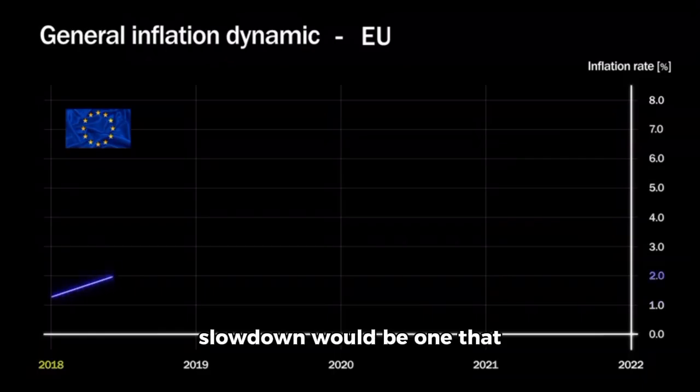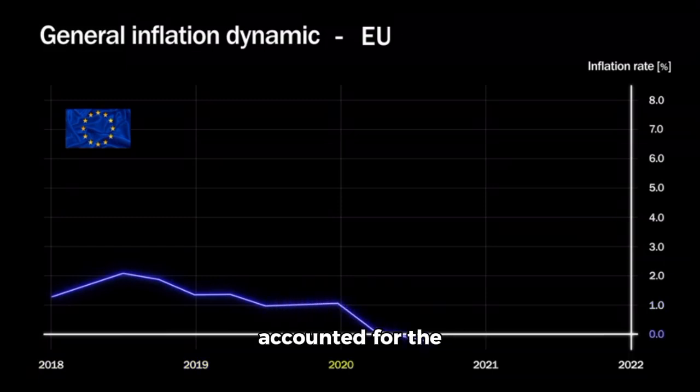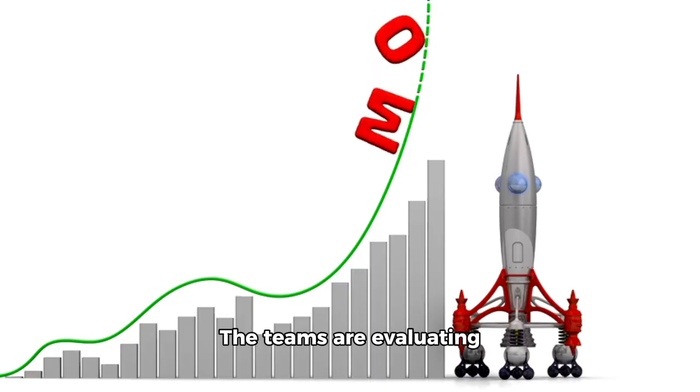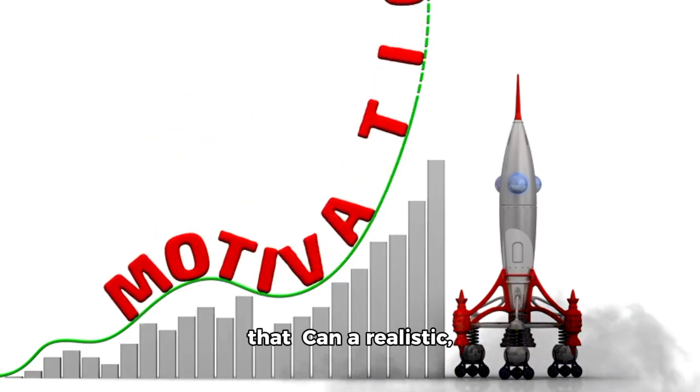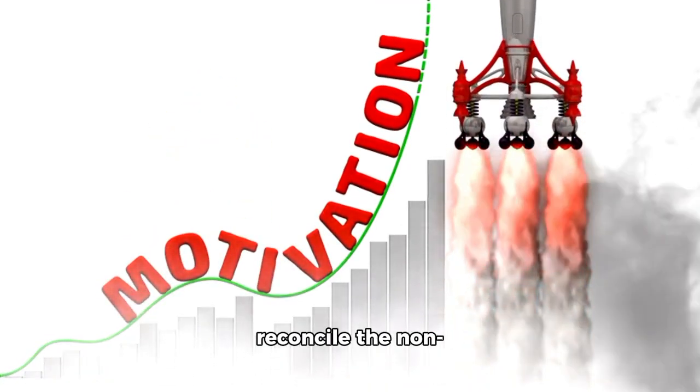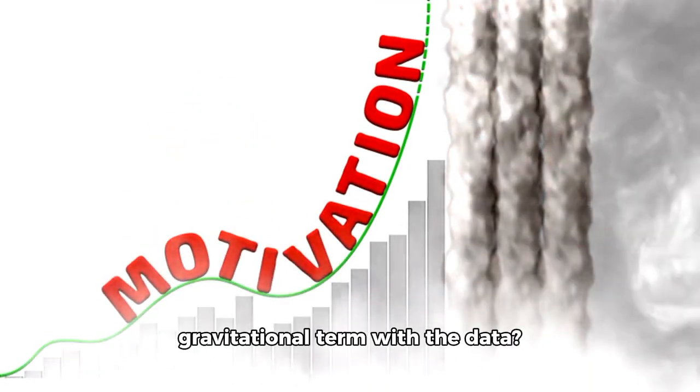The only anomalous slowdown would be one that departs from the Keplerian expectation after you've accounted for the minuscule outgassing push that acts like a rocket. The teams are evaluating that. Can a realistic, physically motivated model reconcile the non-gravitational term with the data?